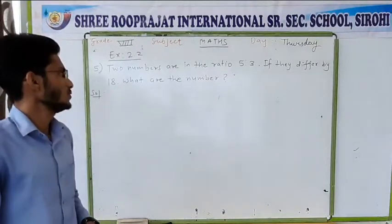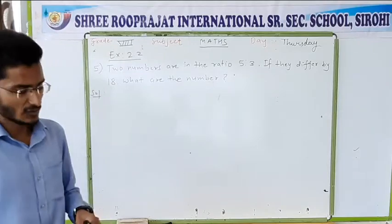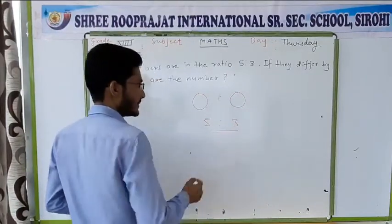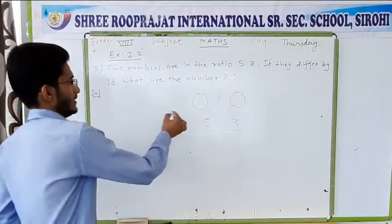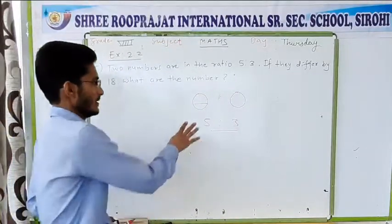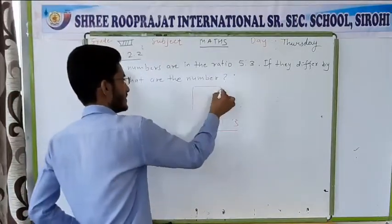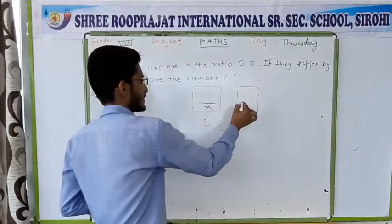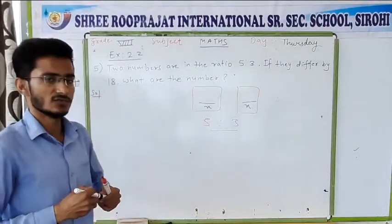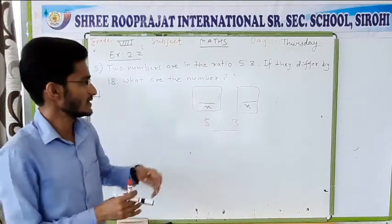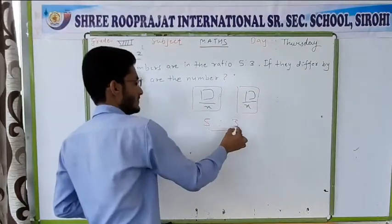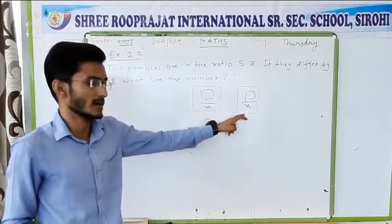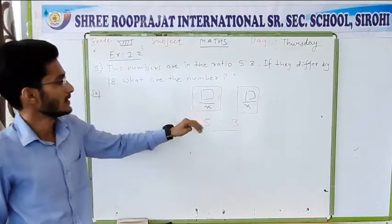Question number 5: two numbers are in a ratio of 5:3. These are the two numbers and they are in the form of 5:3. That means if you divide both numbers by the same number, you will get 5 and 3. So ratio means you divide both numbers by the same number and you get 5 ratio 3.